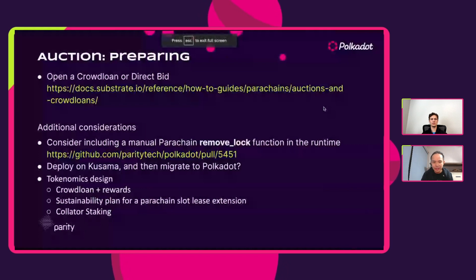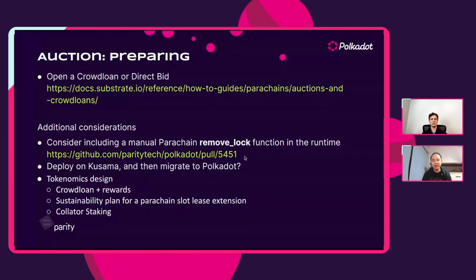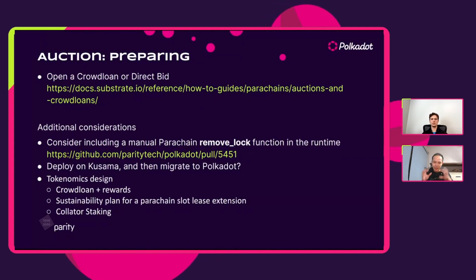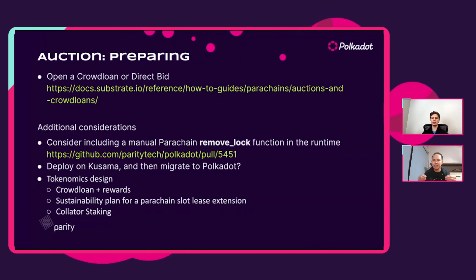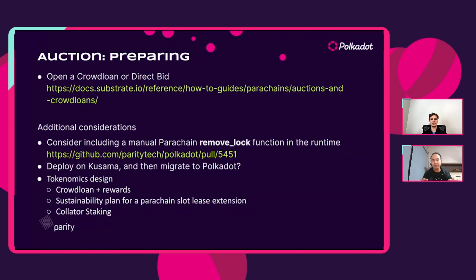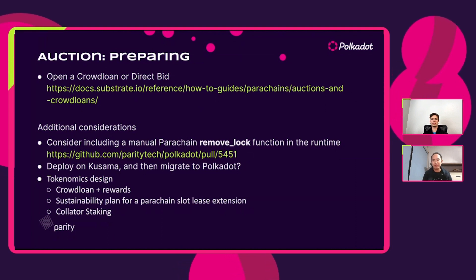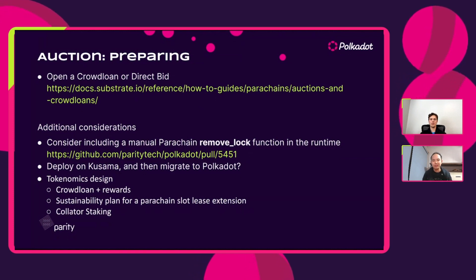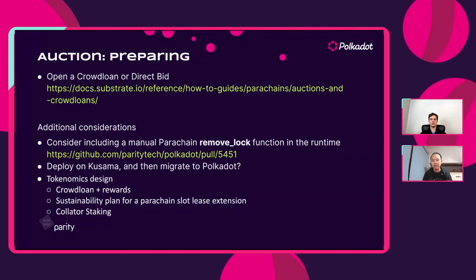A few other considerations: consider the remove_log function within your runtime. Looking at this particular pull request will help you understand what it does. In the past, we've observed crowdloans as a particularly important execution — if you make a mistake, as with everything in blockchain, this can become a problem. The remove_log function allows you, before you actually win the slot, to actually change that bid or submission made through the crowdloan. This means you could start making some changes in case of mistakes. Strongly recommend including this in the runtime.